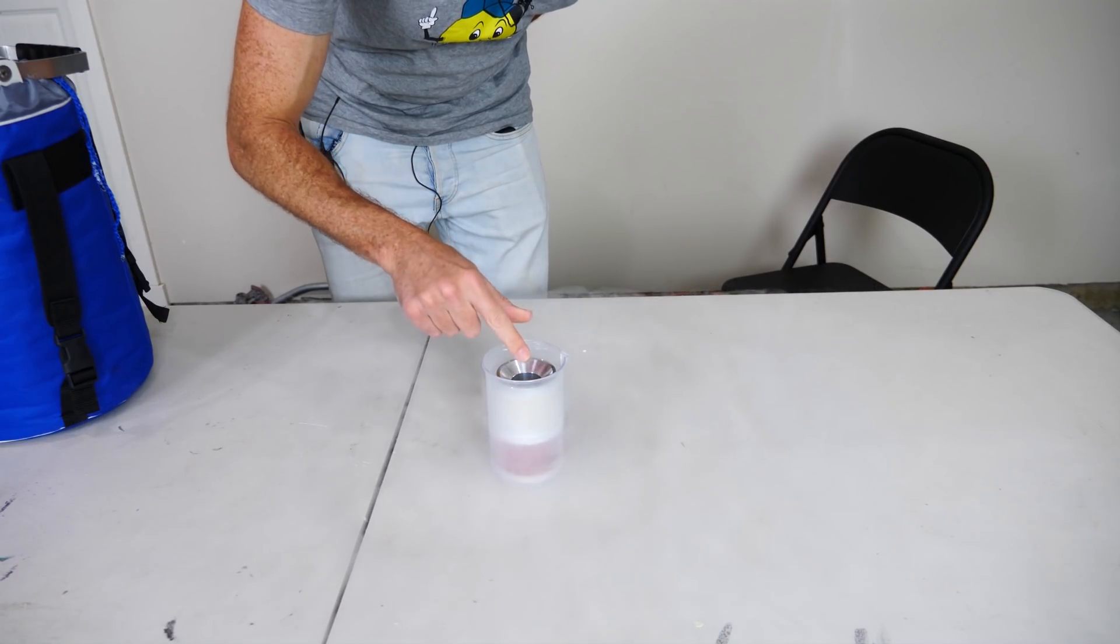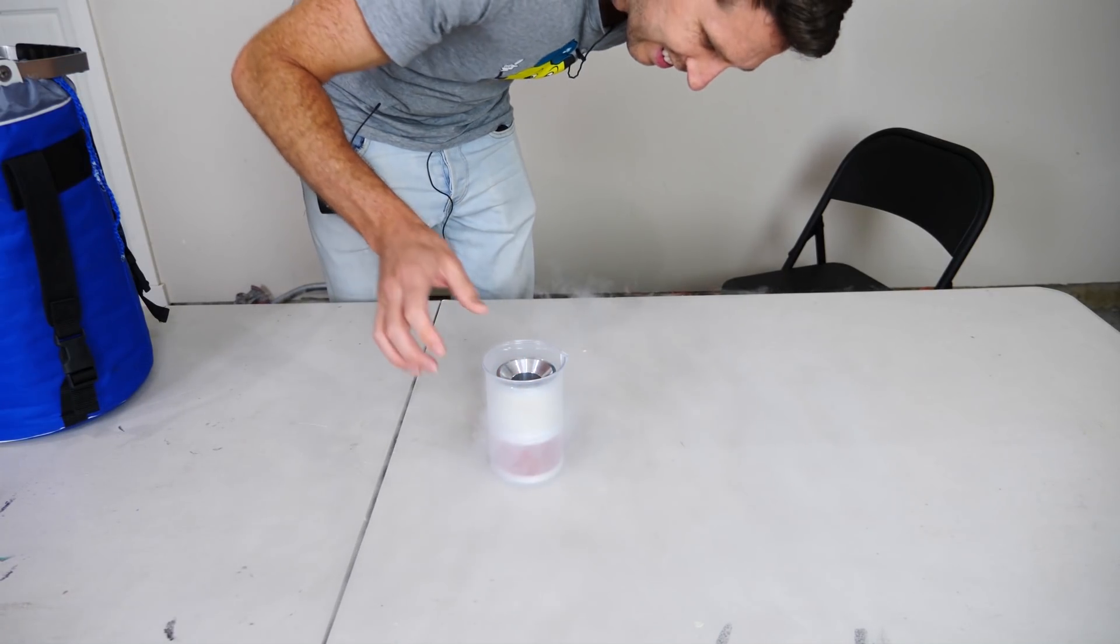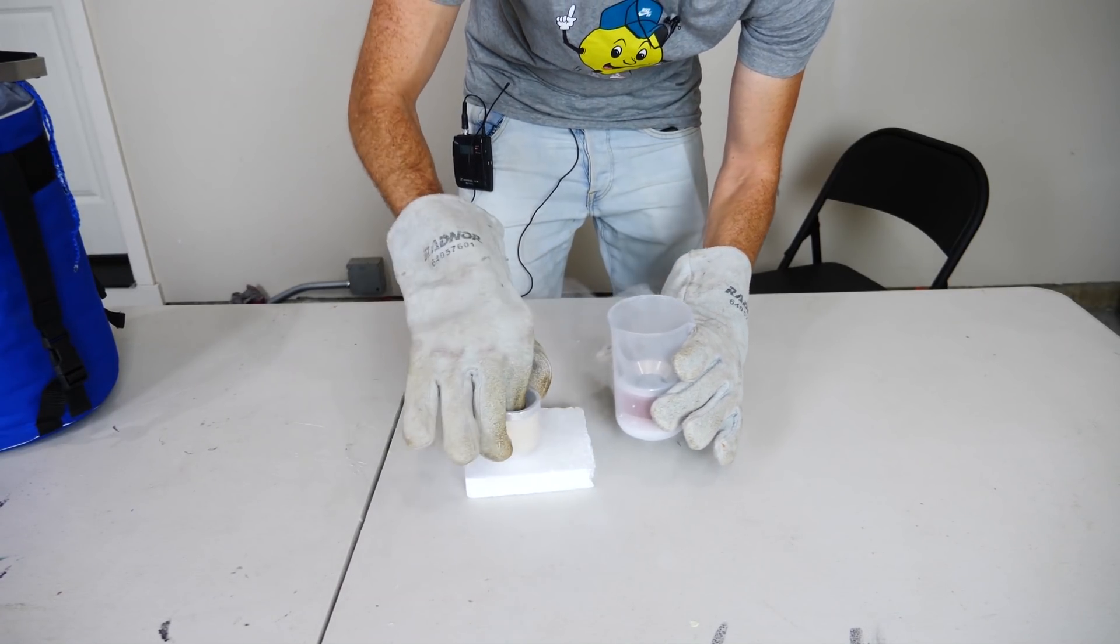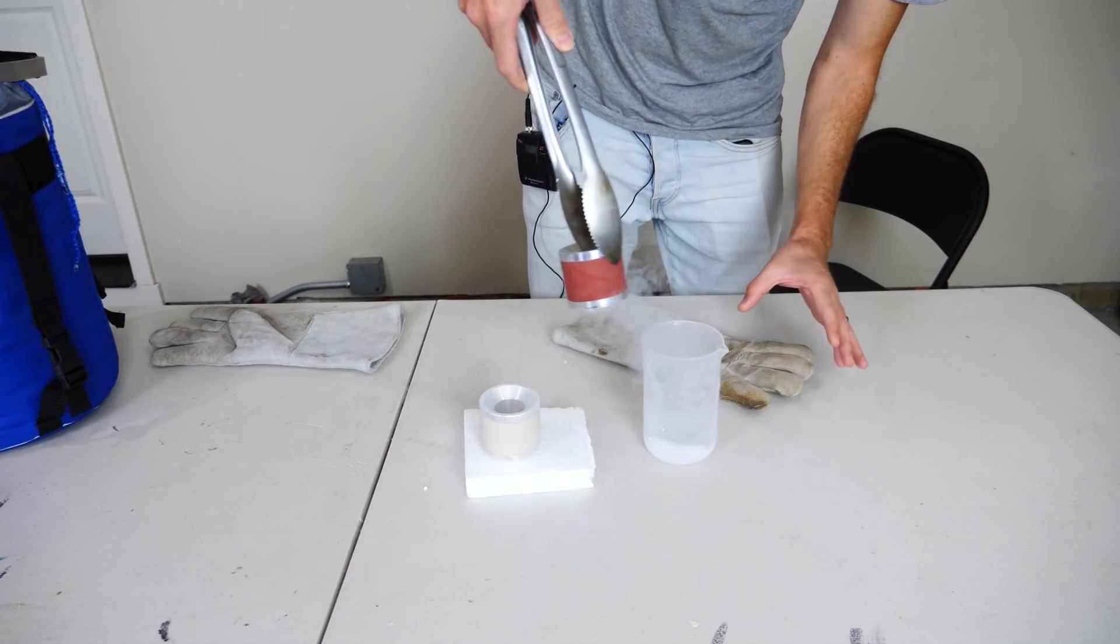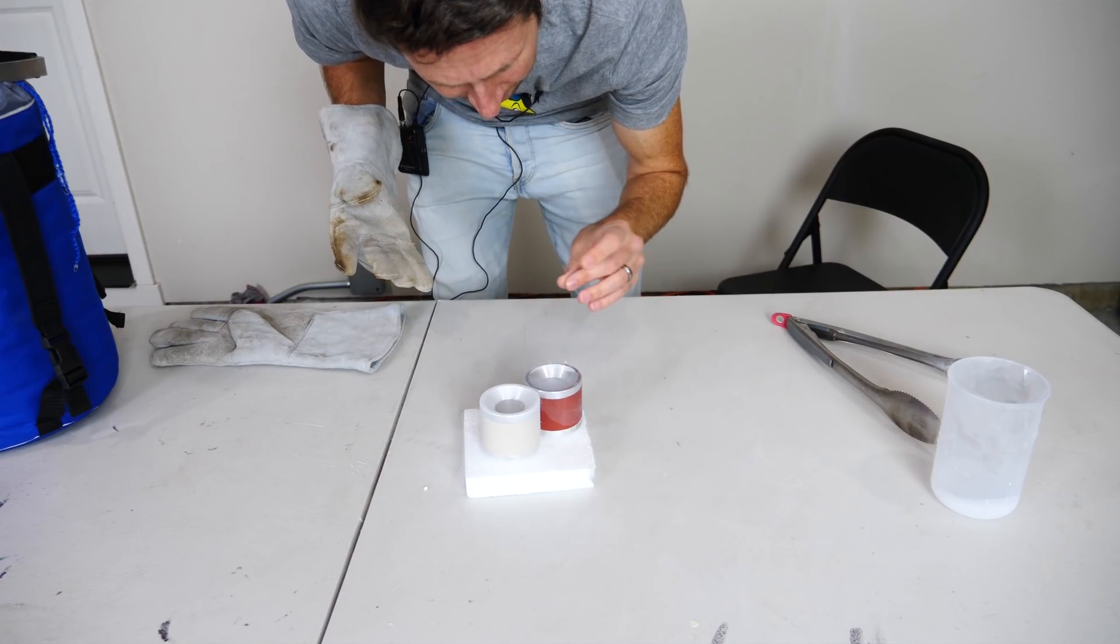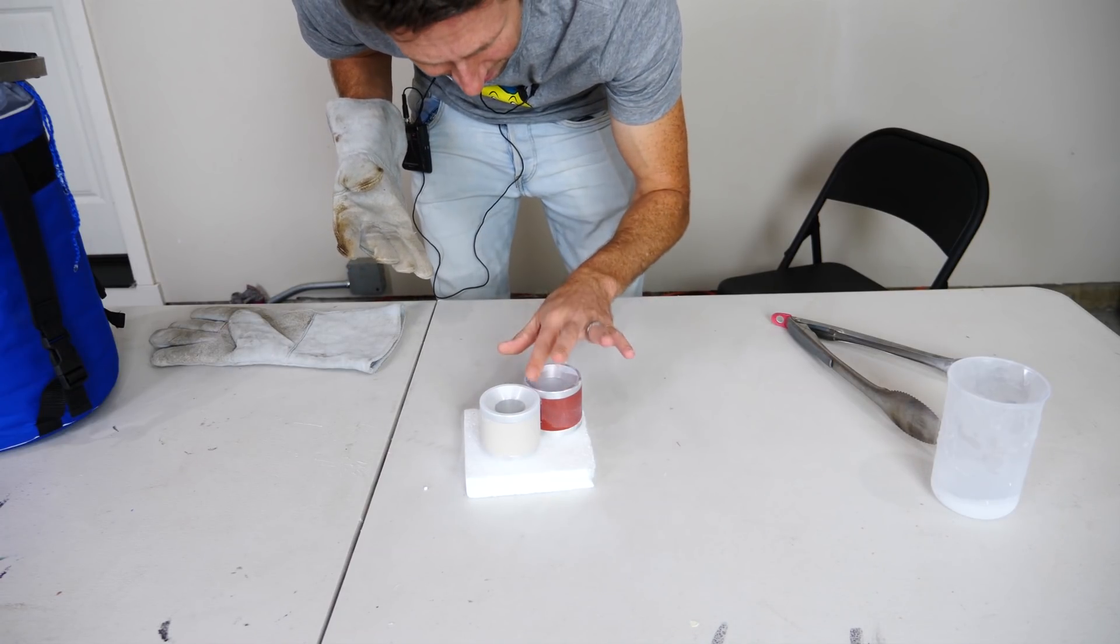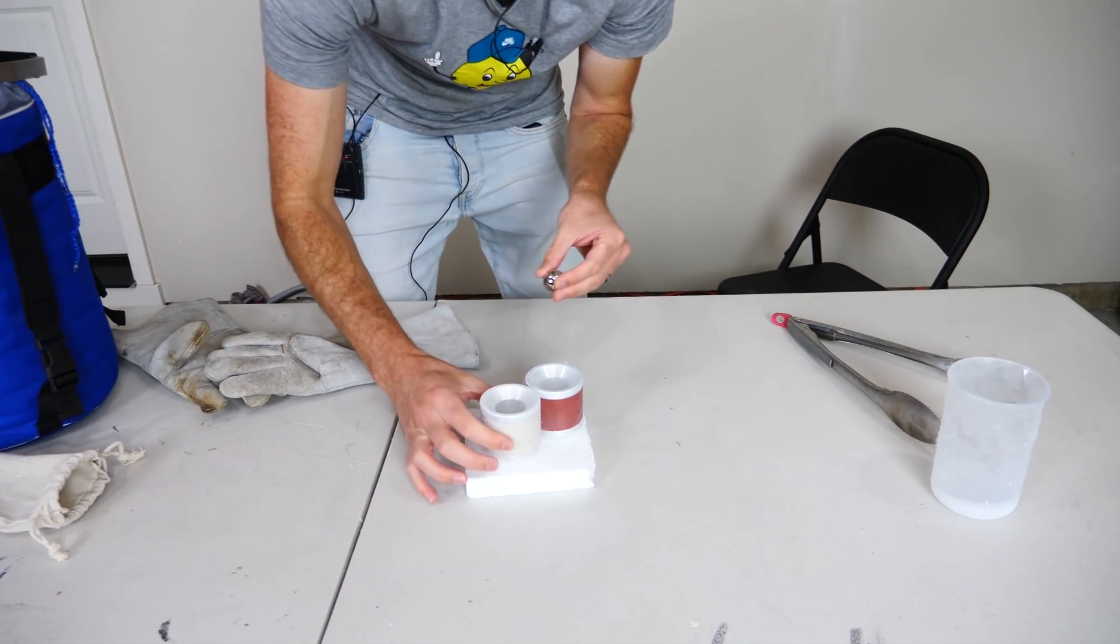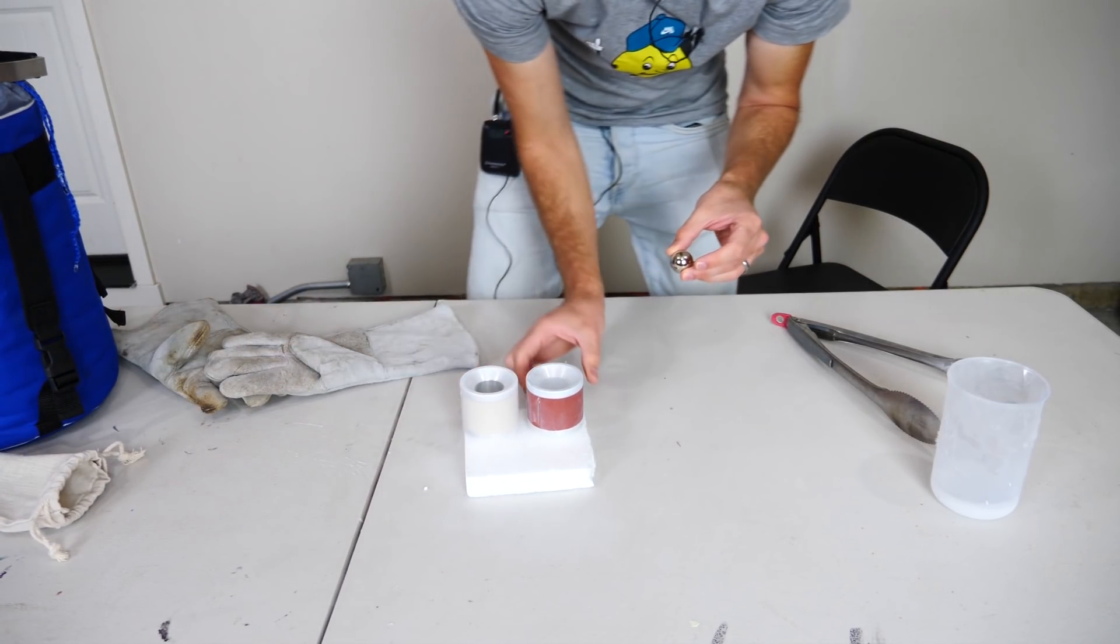That is some cold metal. Okay, now let's see what happens when I drop the magnet down it. Ouch. I think it's condensing liquid oxygen on it. Okay, here we go. Oh, I think the red one's colder.